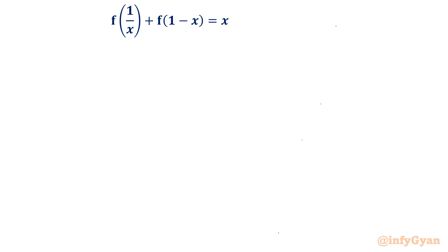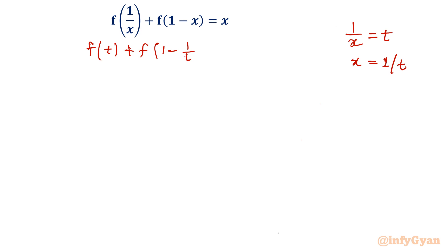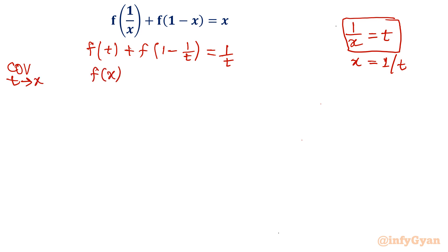Let's get started by giving the first substitution: let 1/x = t, which means x = 1/t. Substituting, we get f(t) + f(1 - 1/t) = 1/t. Changing the variable t back to x, this becomes f(x) + f(1 - 1/x) = 1/x. We will call this Equation 1.